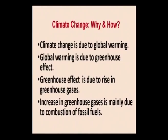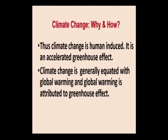Climate change is due to global warming. Global warming is due to the greenhouse effect. The greenhouse effect is due to a rise in greenhouse gases, and the increase in greenhouse gases is mainly due to combustion of fossil fuels. Thus climate change is a human-induced one — it is an accelerated greenhouse effect. Climate change is generally equated with global warming, and global warming is attributed to the greenhouse effect.